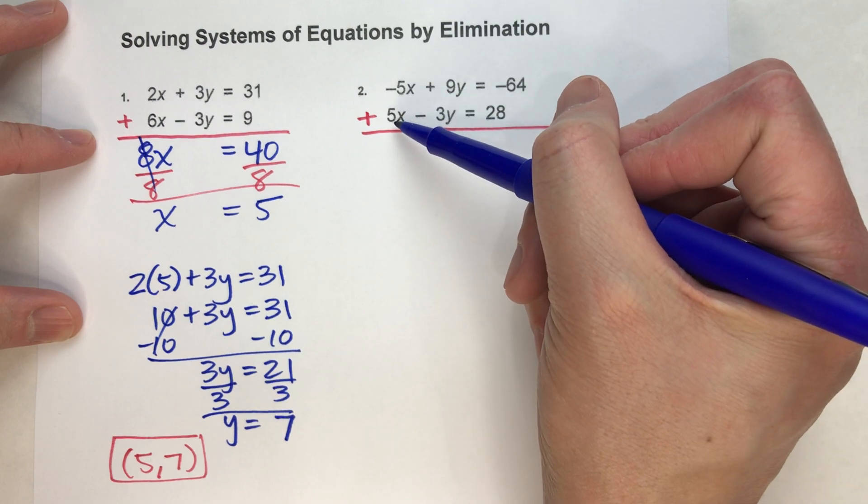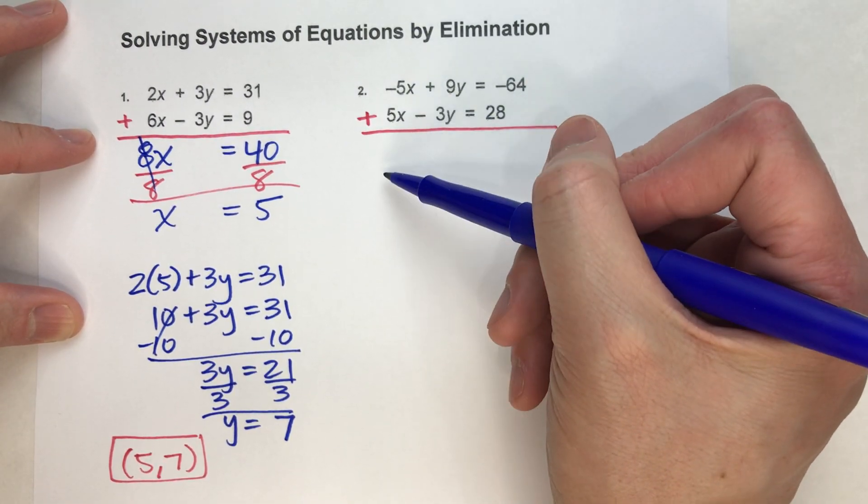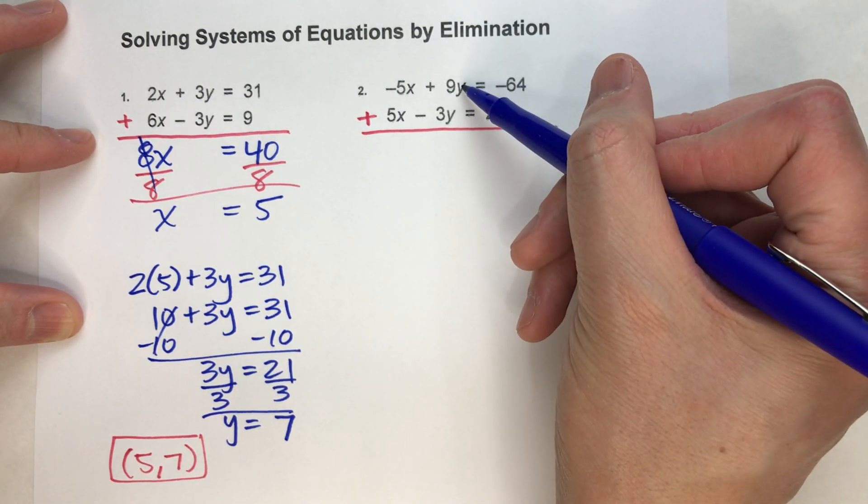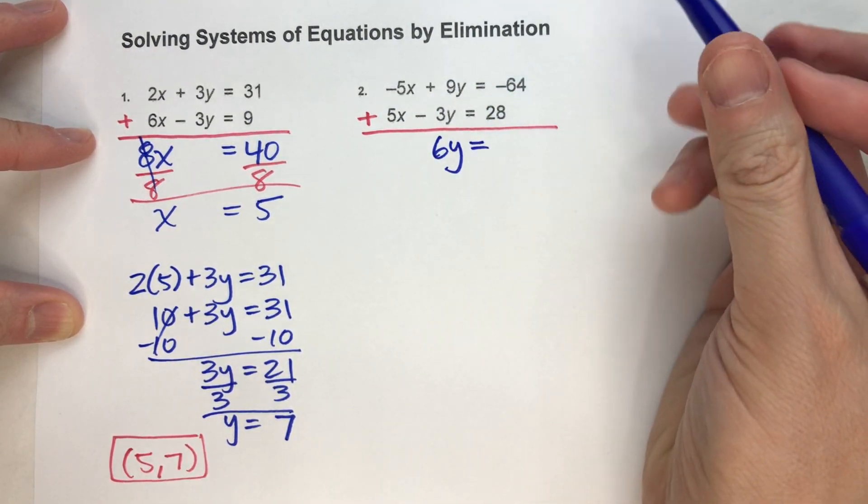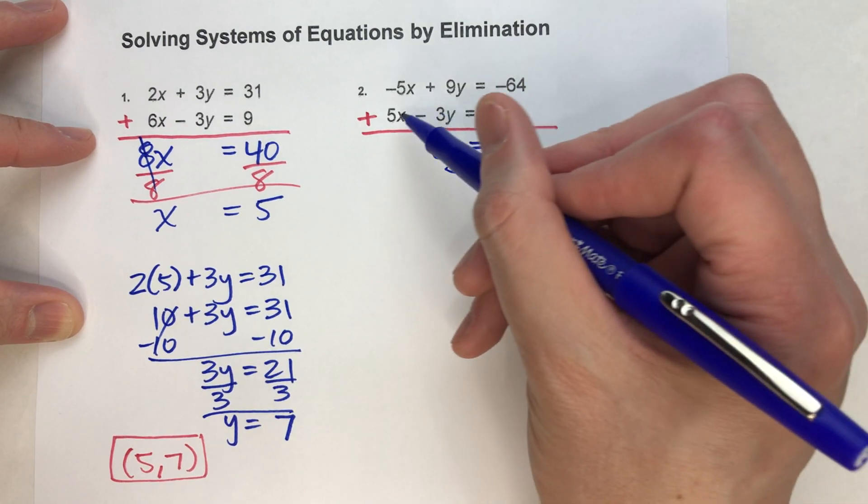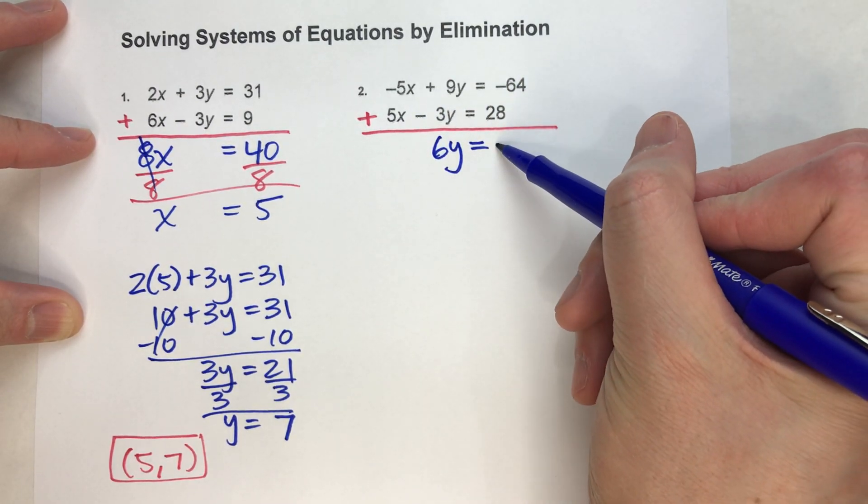Because when we do that, notice negative 5x plus 5x gets us no x's. 9y plus negative 3y gets us 6y. Drop down my equals. Negative 64 plus 28 gets us negative 36.